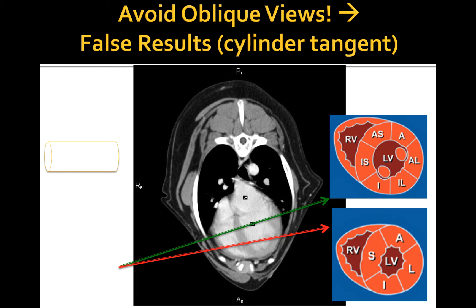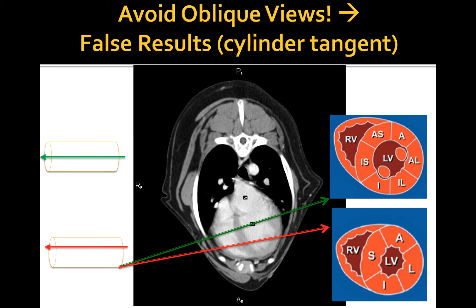The same cylinder tangent effect may occur when you image major vessels, such as the caudal vena cava. If the ultrasound beam fails to be directed through the center of the vessel and instead the beam is tangent to it, the diameter of the vessel may be underestimated. One way to avoid this problem is to obtain both short and long axis views of the vessel and compare the results between the two.